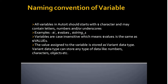Naming convention of variables: All variables in AutoIt should start with a dollar character and may contain letters, numbers, and underscores — for example, $i, $value1, $string_1.